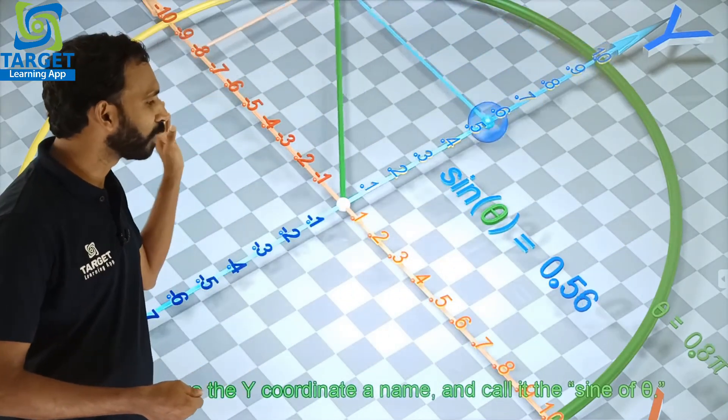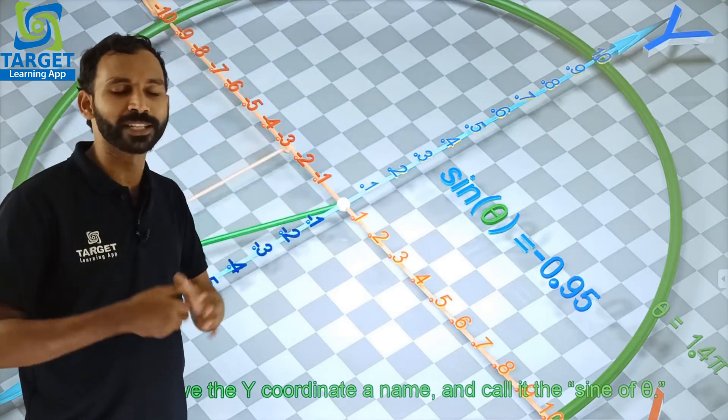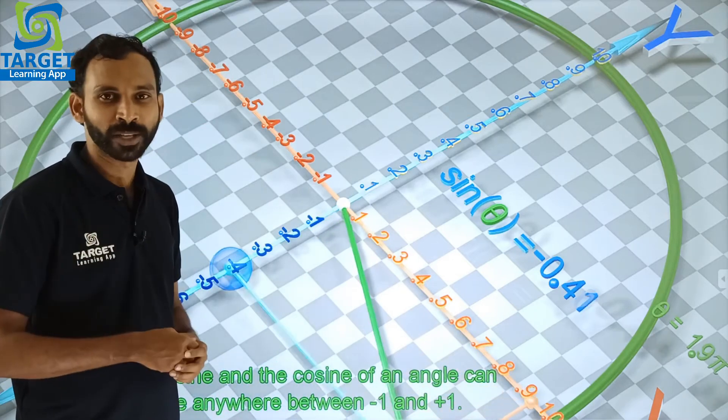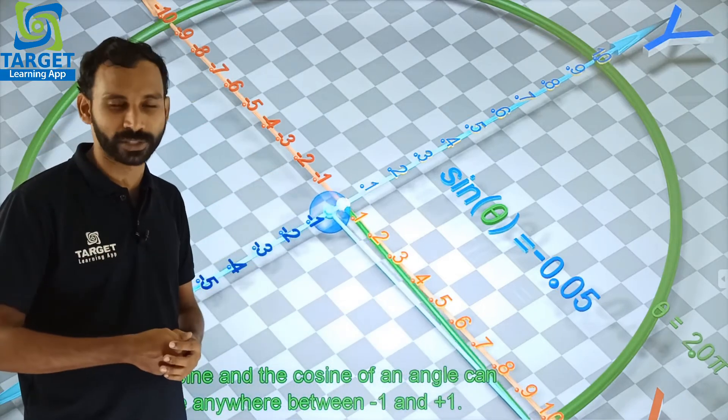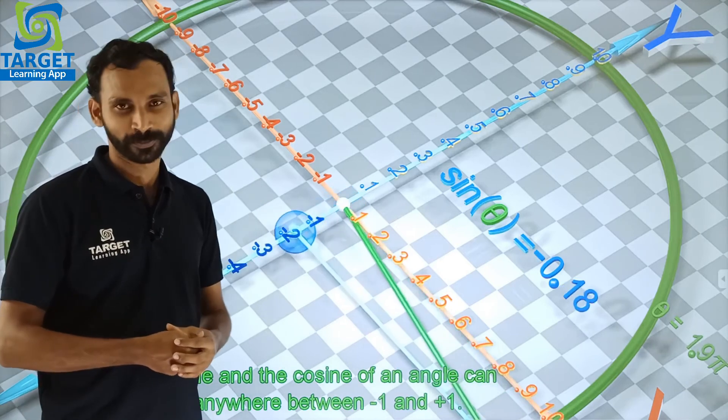The values of x-coordinate and y-coordinate will be always in between minus 1 and 1. That means we can conclude that the values of sin theta and cos theta is always in between minus 1 and 1. Thank you.